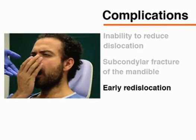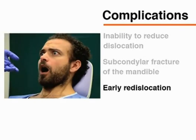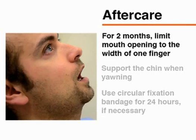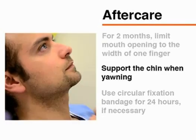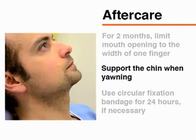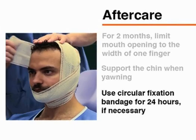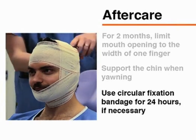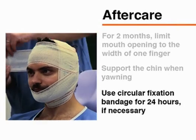Because early repeat dislocation is a clinically significant risk, it is important to instruct the patient in preventive aftercare. Instruct the patient that for the next two months, he or she should not exceed the intra-incisal distance of one finger's width when opening the mouth, and should support his or her chin with a fist when yawning. In patients who have had repeated dislocation, consider the use of a fixation bandage after the procedure, which can be kept in place for 24 hours or as appropriate.